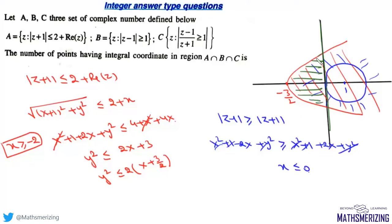The region which is common to all three conditions is this region. Now what are the possible integral coordinates in this region? One possibility is when the value of x is -1. If x = -1, then y = ±1.